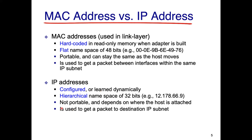IP is used to get a packet from one IP subnet to anywhere in the world, but MAC is used to send a packet from one machine to another within the same IP subnet — it operates at the local area network level, the data link layer.